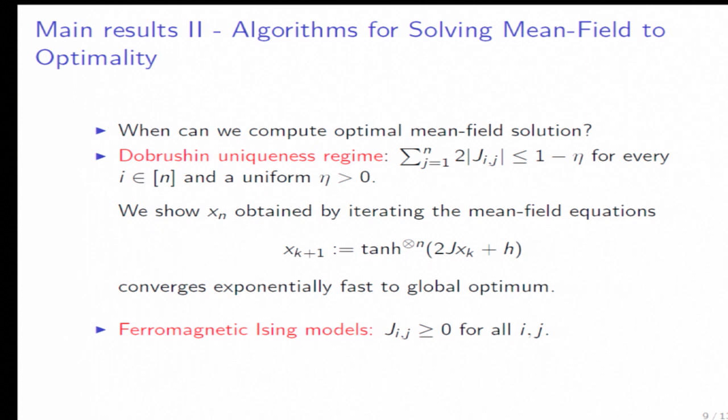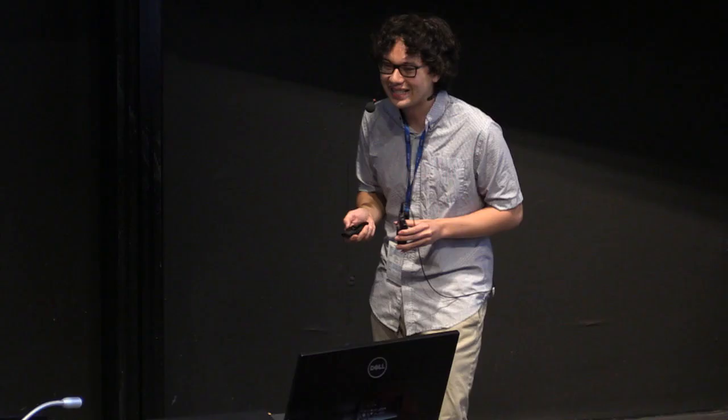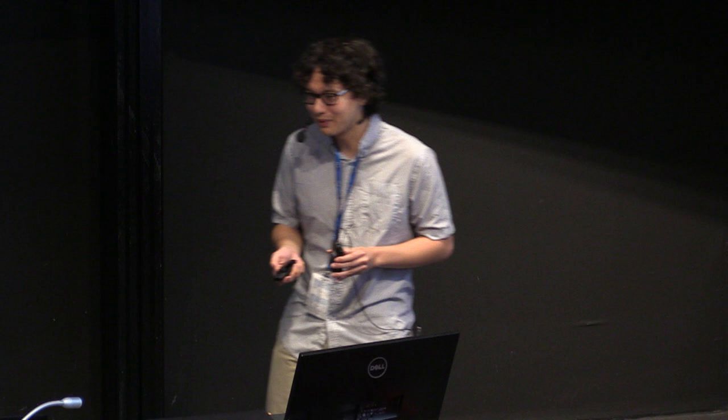So let me just say there's also algorithms in this paper. So mean field, how useful is it if we can't compute it? So in the Dobrushin uniqueness regime, which is a high temperature regime for the model, we can show that just iterating the mean field equations is a very good algorithm. So it converges exponentially fast to the global optimum of the mean field problem. And then in the case that the models are ferromagnetic, there's a more complicated algorithm, which involves some classical Markov chain results, which I won't go into details.